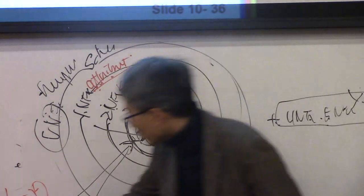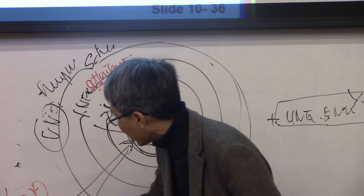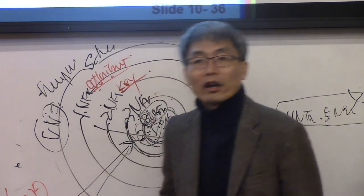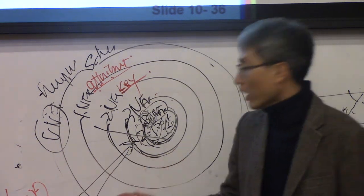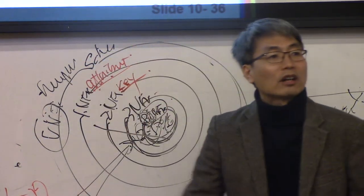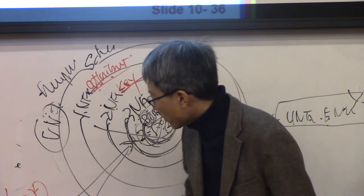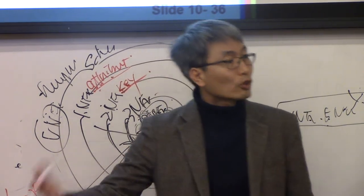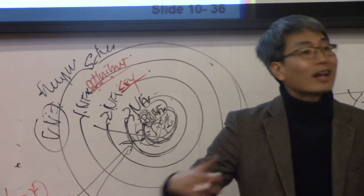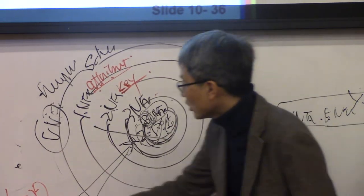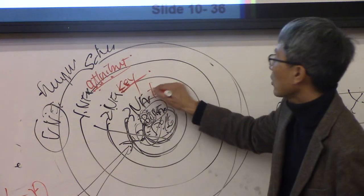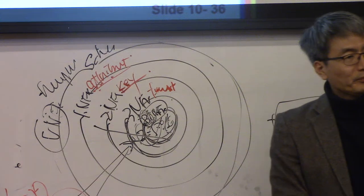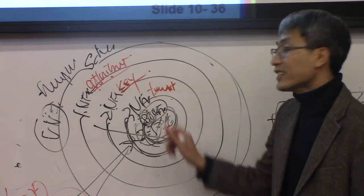Third normal form: no transitive dependency. Remember A determines B, B determines C — that's transitive. A social security number can determine all others transitively, but implicitly there is another dependency, B to C, which has another meaning. We do not allow such transitive dependency, which means we separate. That is transitive — and that's what we remove for the third normal form.